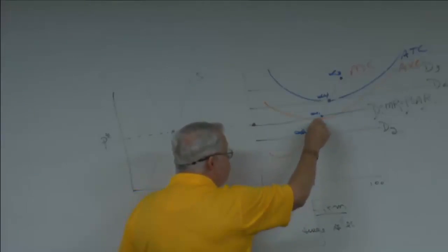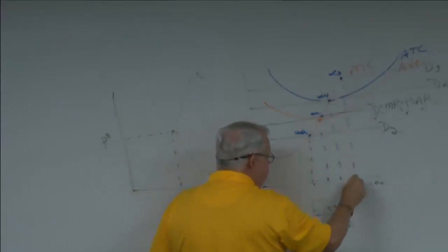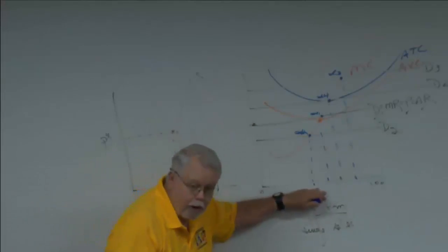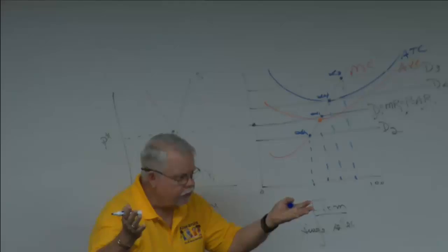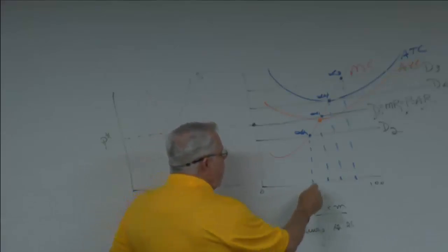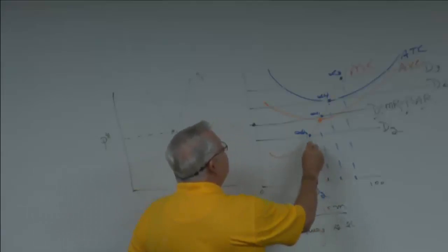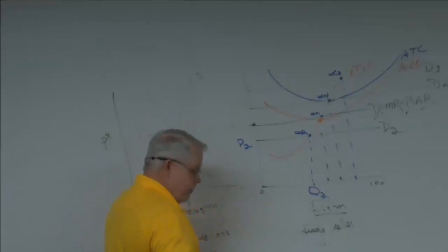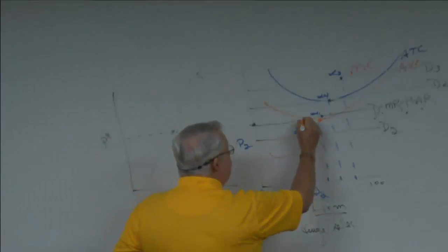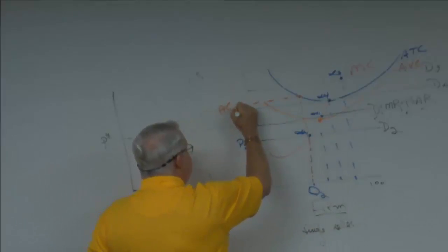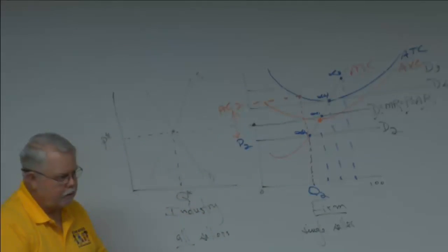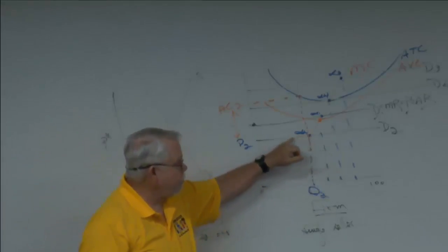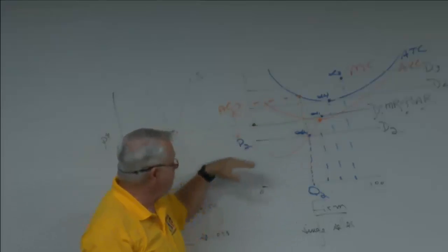For whatever demand curve you're looking at, find the quantity and then compare the price and the average cost to see if you're making a profit. At Q2: read up to price 2, then read up to average cost 2 — it's more than the price, more than average revenue. I'm losing money. Find the price from the demand curve, find the average cost from the ATC curve, and see which one's higher.